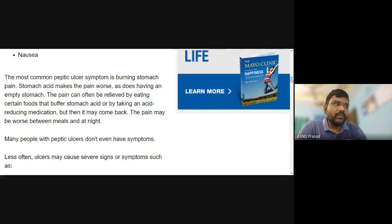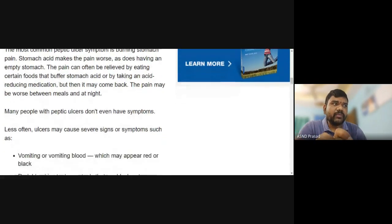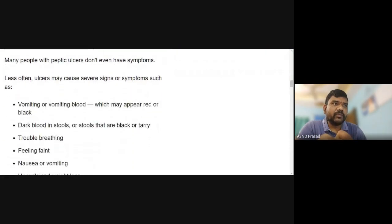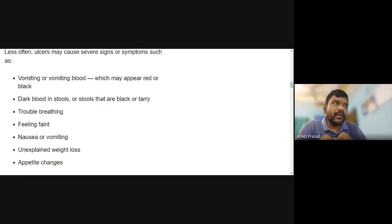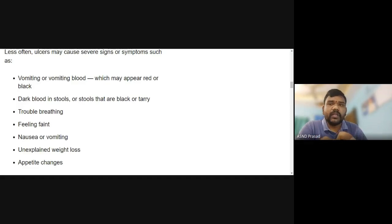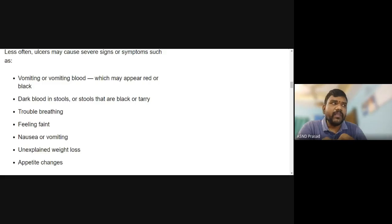Many people with peptic ulcers don't even have symptoms. More severe symptoms include vomiting of blood and dark blood in stools. Black-colored stool indicates internal bleeding. There may also be trouble breathing.